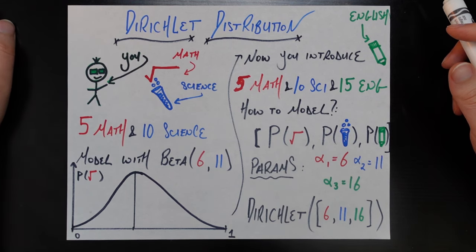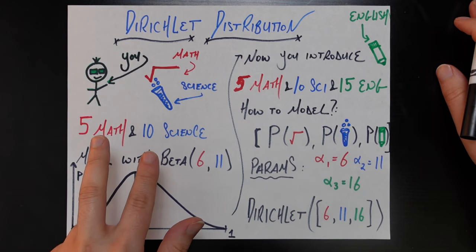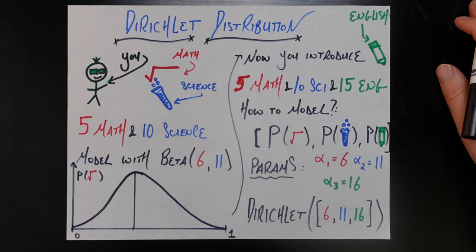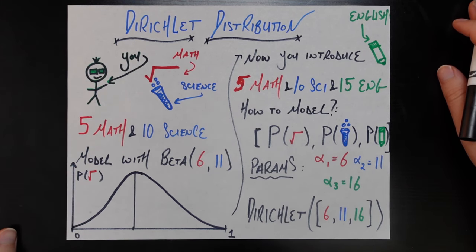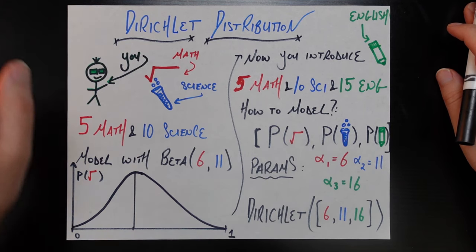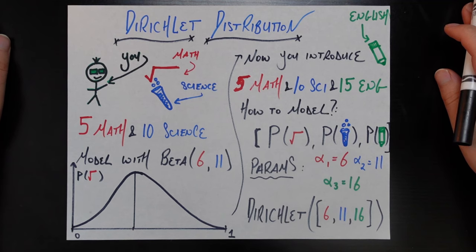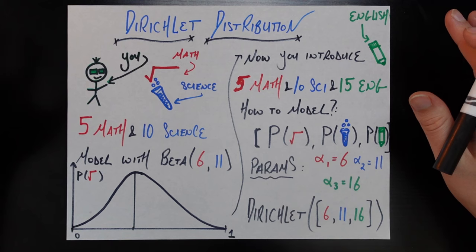Now the thing you're trying to model here is the probability that a student would be a math major. Thinking about all the component parts we have, we have two categories. We're trying to model the probability of one of the categories, which implicitly will model the probability of the other because they have to add up to one. Sounds like a perfect candidate for the beta distribution. Now I have a whole video on the beta distribution — I'll link it below.